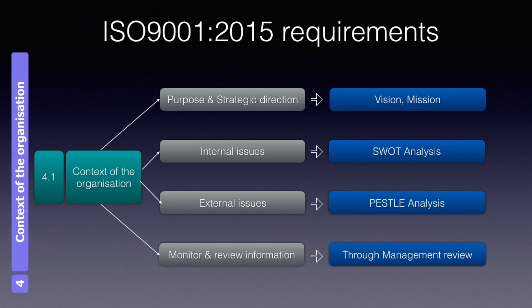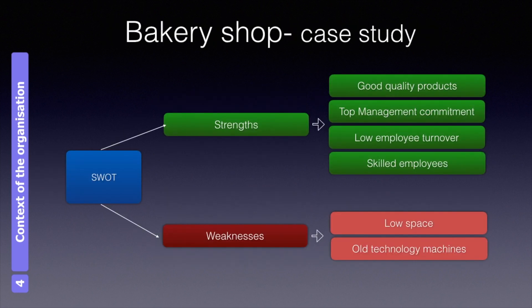Let's see how to use SWOT analysis to determine internal issues, using a bakery as an example. Two owners of the bakery shop brainstormed to identify the following strengths and weaknesses. Strengths listed: good quality of products, commitment to quality regardless of pressure to reduce costs, and very low employee turnover — almost all employees hired three years ago are still there and are highly skilled.